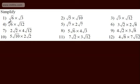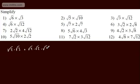If we look at root 6 multiplied by root 12, we could write root 6 as root 2 multiplied by root 3, then prime factorise 12 to get root 2 multiplied by root 2 multiplied by root 3. We've got a pair of root 2s giving 2, a pair of root 3s giving 3, and one root 2 left over — giving a total of 6 root 2.